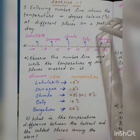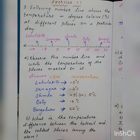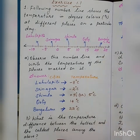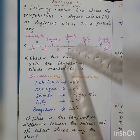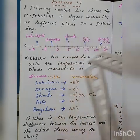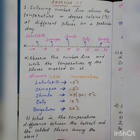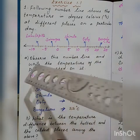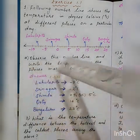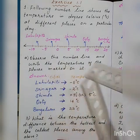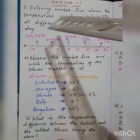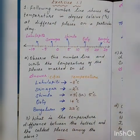The following number line shows the temperature in degree Celsius at different places on a particular day. This is your number line. The cities shown are Lahaul Spiti, Srinagar, Shimla, Ooty, and Bangalore — 5 cities are here. The first question is: observe this number line and write the temperature of the places marked on it. The temperature is measured in degree Celsius.